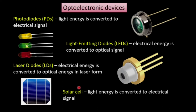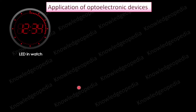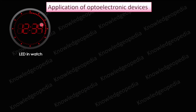Let me now tell you some of the applications of these optoelectronic devices. First, the light emitting diode: this digital watch displays its digits using LEDs, which you may have seen in public places. Further, our communication has become very fast — earlier we used telegrams, which took a lot of time to convey a message from one place to another.